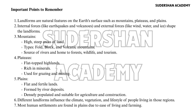Important points to remember: Landforms are natural features on the earth's surface, such as mountains, plateaus, and plains. Internal forces like earthquakes and volcanoes, and external forces like wind, water, and ice shape the landforms. Mountains are high, steep areas of land — types include fold, block, and volcanic mountains — and are sources of rivers and home to forests, wildlife, and tourism.